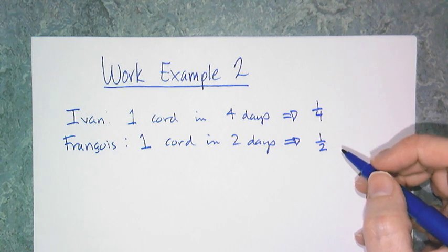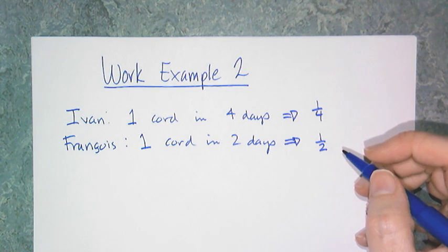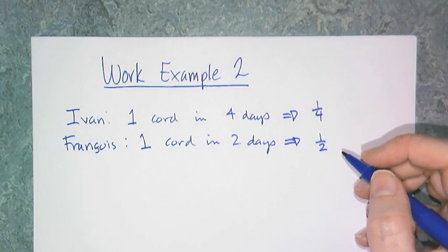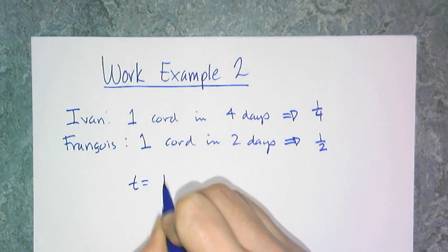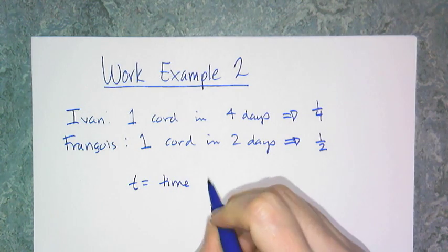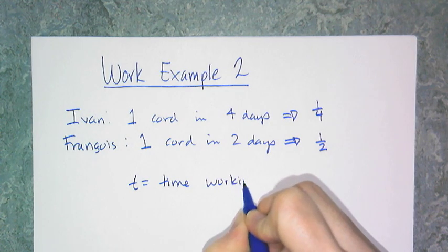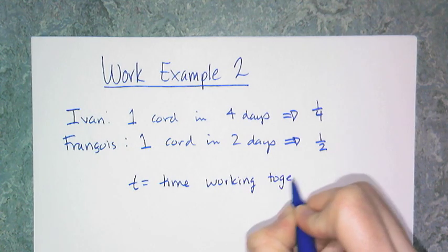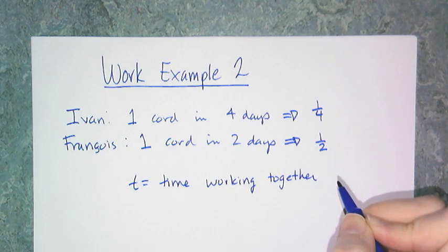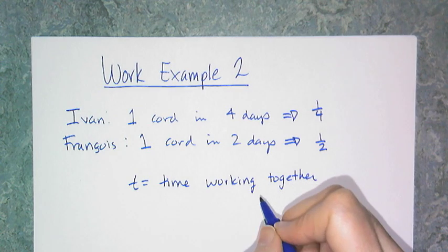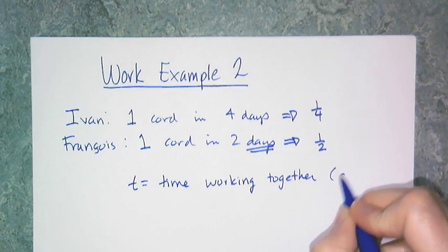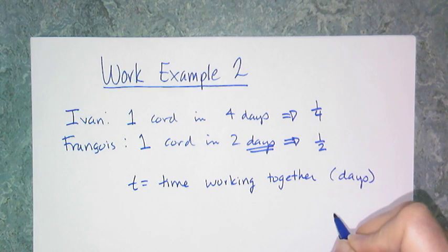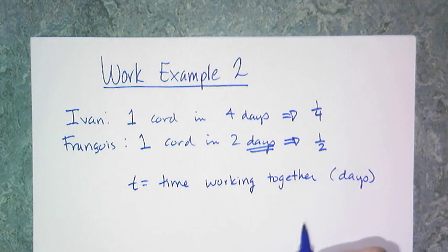And so, this question asks for how long does it take them working together? So, they're working for the same amount of time. So, I'm going to use t equals the time working together. And I'm going to take a cue from the word problem's units to determine the units on the time. And so, I'm going to use days, because the work rates are in days. So, t is the time working together in days.